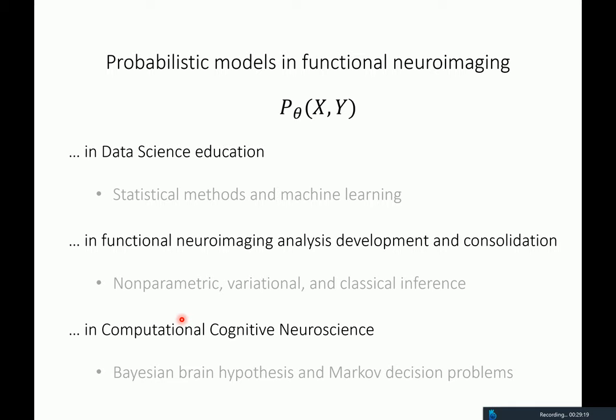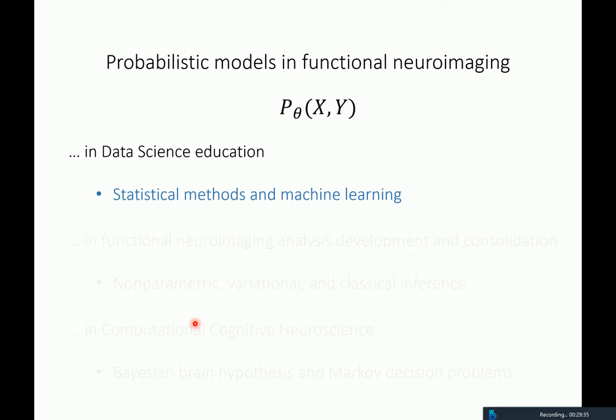I've shown you two examples of how we use probabilistic models in functional neuroimaging analysis and one in computational cognitive neuroscience. After our discussion I will talk a little bit about probabilistic models and statistical methods in machine learning. Thank you very much.